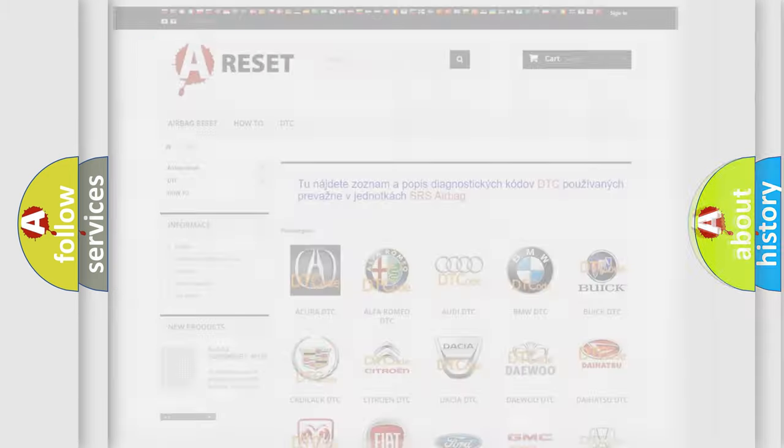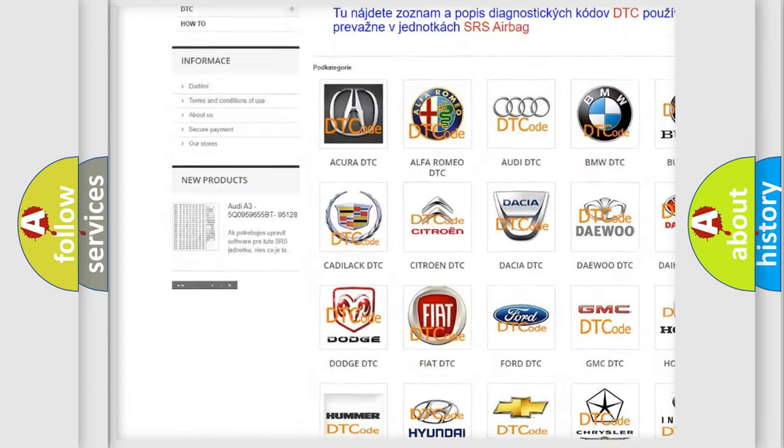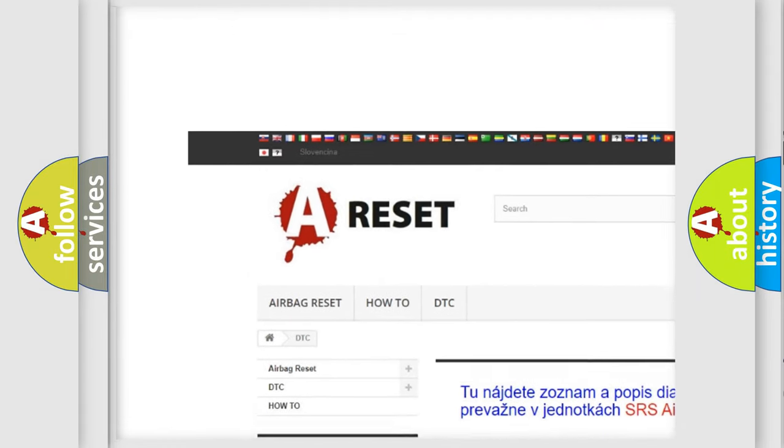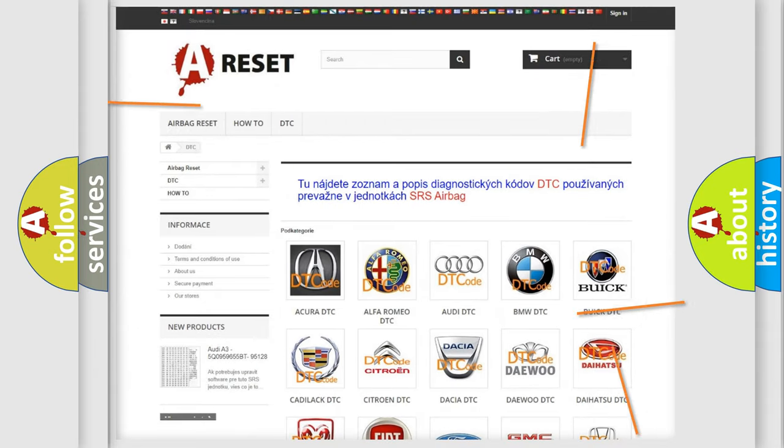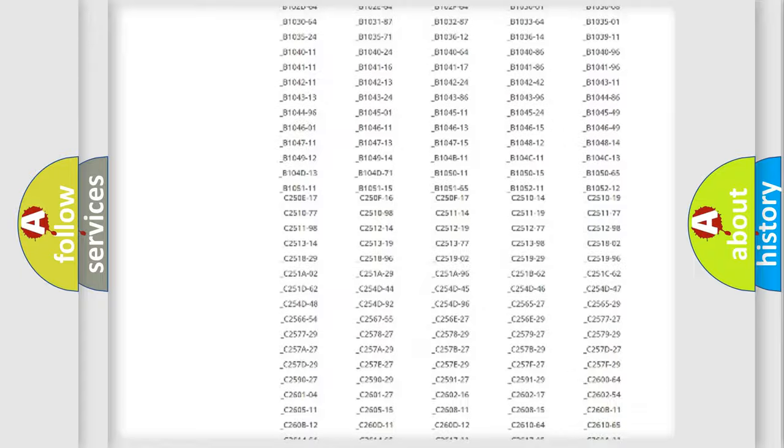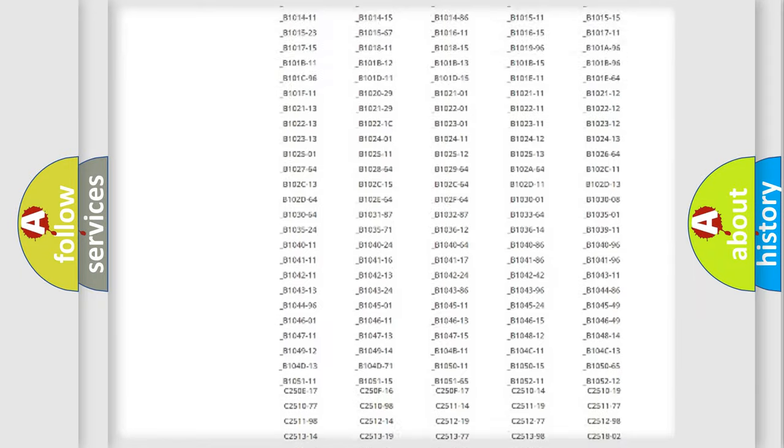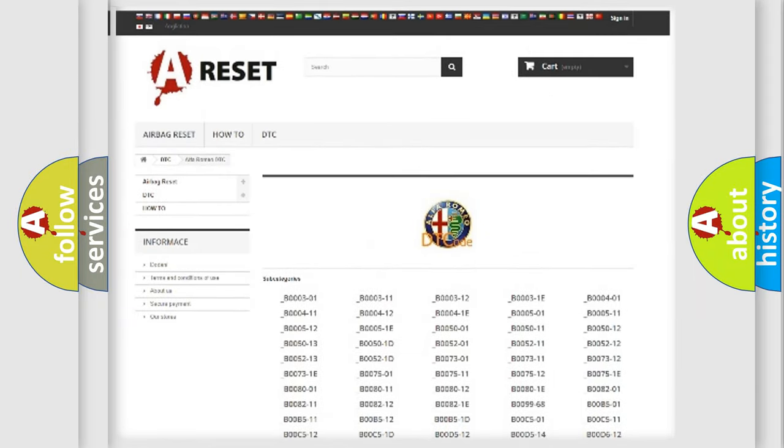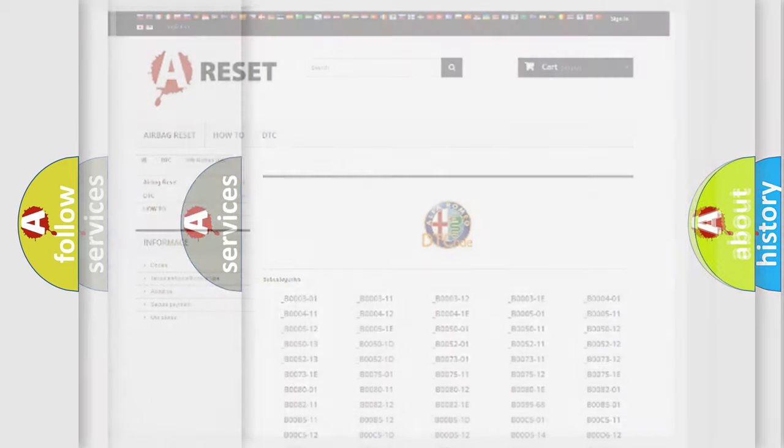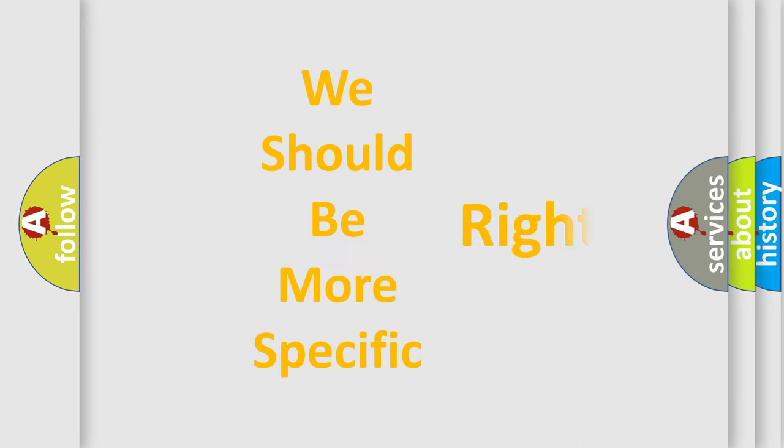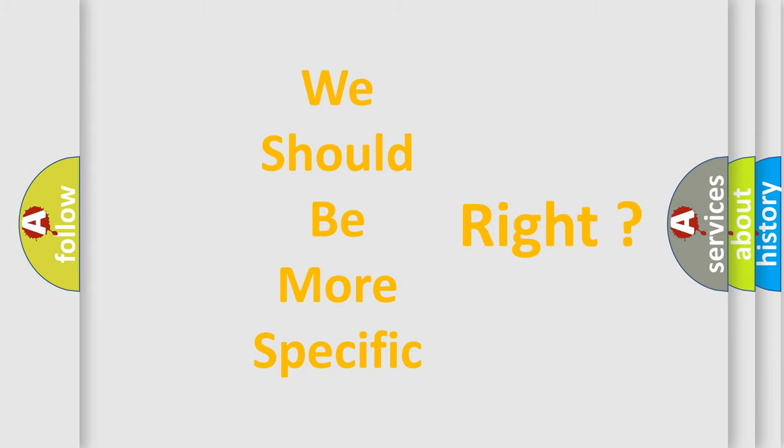Our website airbagreset.sk produces useful videos for you. You do not have to go through the OBD2 protocol anymore to know how to troubleshoot any car breakdown. You will find all the diagnostic codes that can be diagnosed in Alfa Romeo vehicles, and many other useful things.